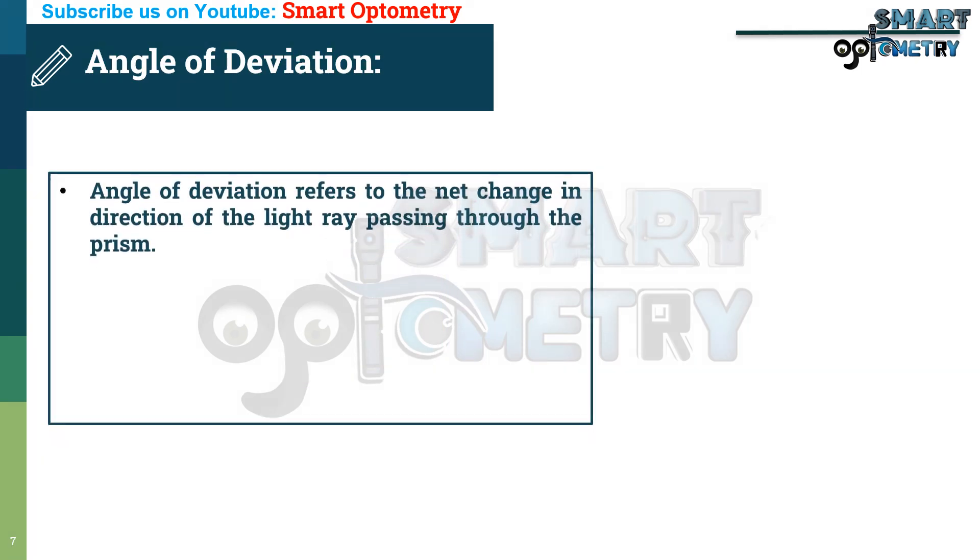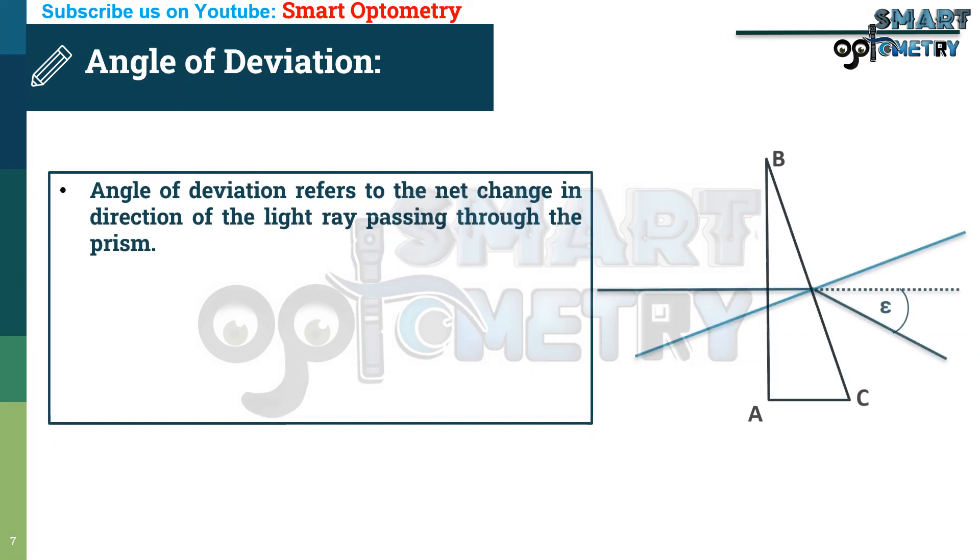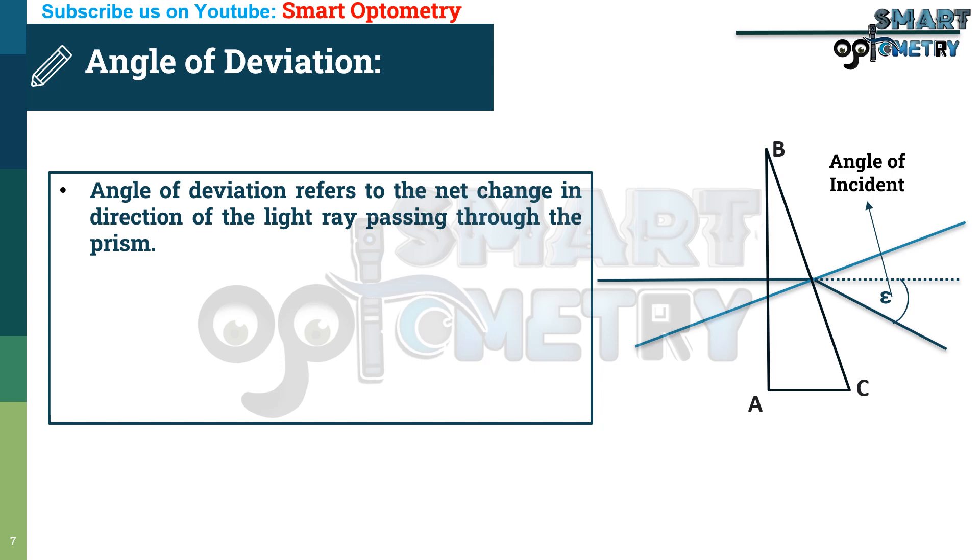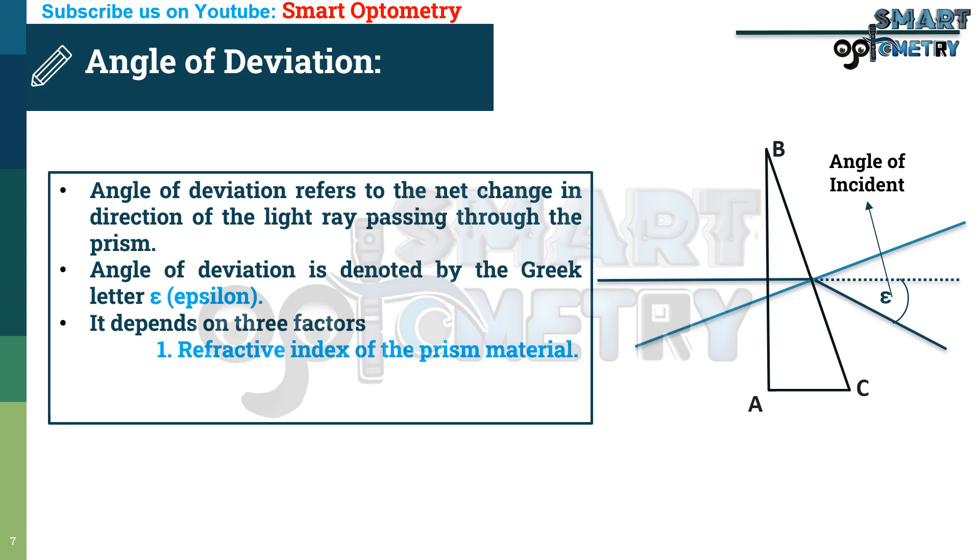Angle of deviation. Angle of deviation refers to the net change in direction of the light ray passing through the prism. Angle of deviation is denoted by the Greek letter epsilon. The angle of deviation of a prism depends on three factors.